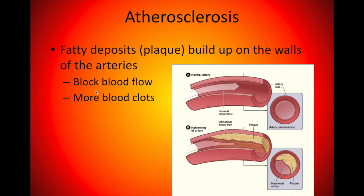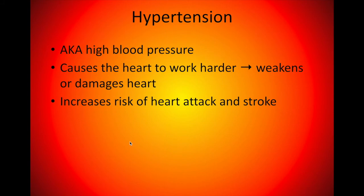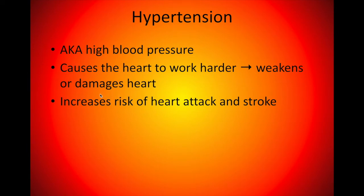A couple of diseases that can affect the circulatory system. Atherosclerosis is when fatty deposits or plaque build up on the walls of the arteries, blocking blood flow and making the heart work harder. A normal artery is clear and easy for blood to flow through; a blocked one forces the heart to expend more energy than it should. Hypertension, or high blood pressure, also causes the heart to work harder, and can weaken or damage the heart with an increased risk of heart attack and stroke.